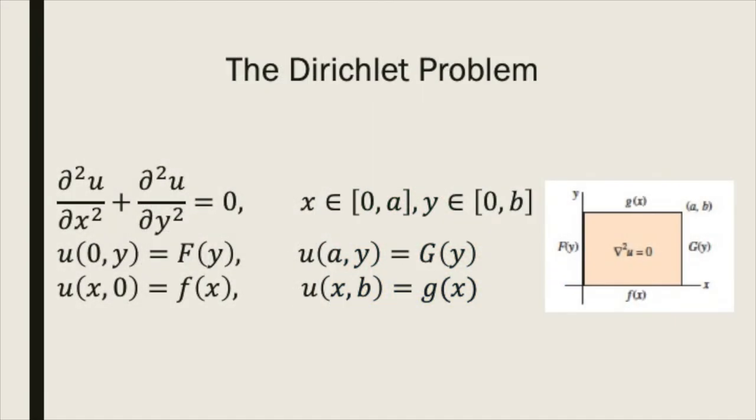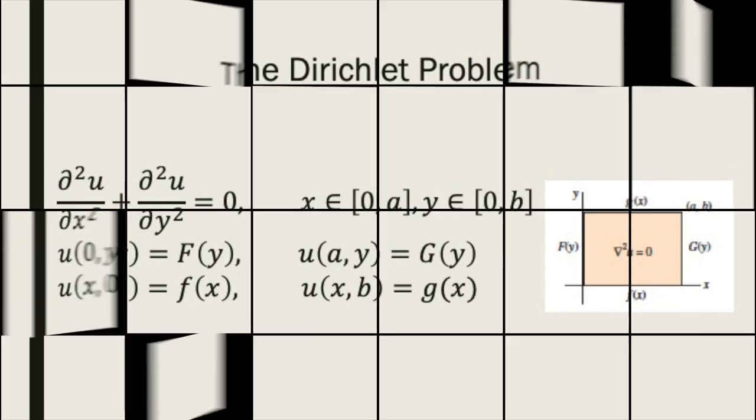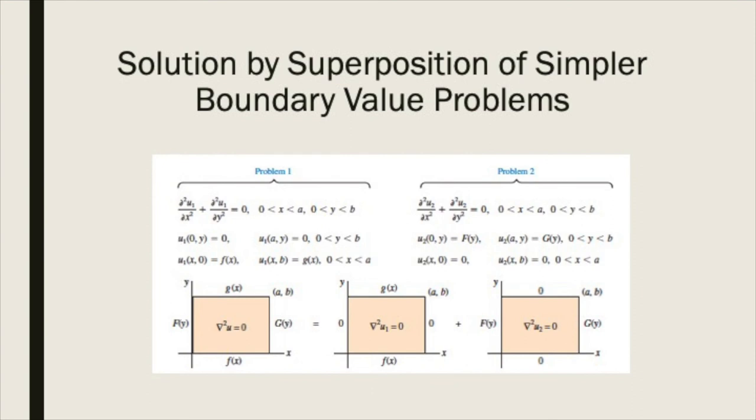Let's move on to a classical problem of the Laplace equation known as the Dirichlet problem. Keeping with the rectangular domain, the Dirichlet problem consists of prescribing general non-zero functions across the entire boundary, or in this case, four functions at each of the sides of the rectangle. How can we go about solving this problem?